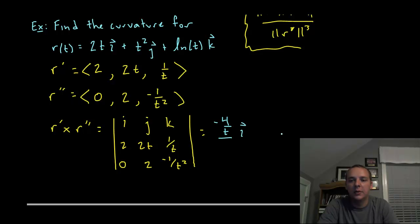For the j-th component, we'll delete the row and column j is in. We get negative 2 over t squared minus 0. So you get negative 2 over t squared. But if you recall for the j-th component, there's actually a minus out here, so a minus minus will make a plus. 2 over t squared.